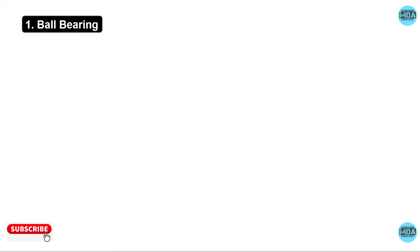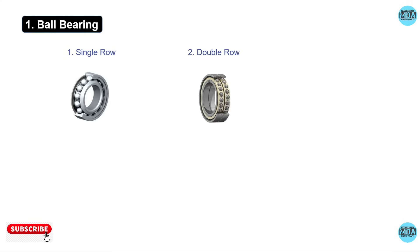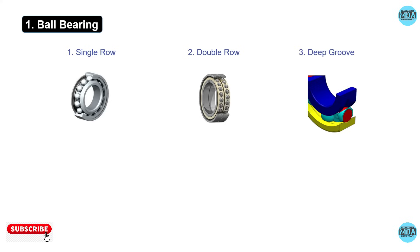Various types of ball bearings are available in the market. The first is the single row ball bearing, where balls are arranged in a single row and are used to handle radial loads. In double row ball bearings, the balls are arranged in two rows, and compared to single row, they have more load carrying capacity.